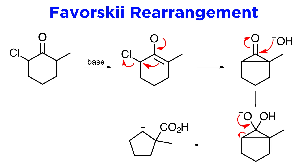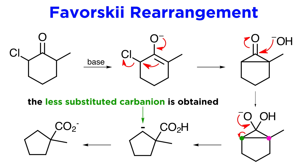This leaves a carboxylic acid with a carbanion moiety next door. Rapid proton transfer from the carboxyl group to the carbanion gives the following product. A key element of regiochemistry we must understand is that in a case such as this, when the system is not symmetrical, opening of the ring usually occurs to yield the less substituted and therefore more stable carbanion.